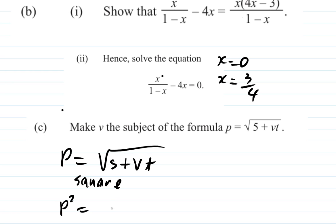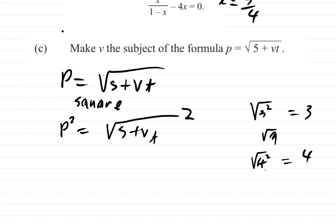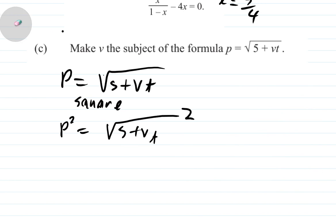When you square the square root of a number, what do you get? It's going to be the number itself — just like the square root of 3 squared is 3, because it's the square root of 9. The square root of 4 squared is 4, because it's the square root of 16. The square and the square root cancel out each other, leaving the number. So you have P squared equals S plus VT.